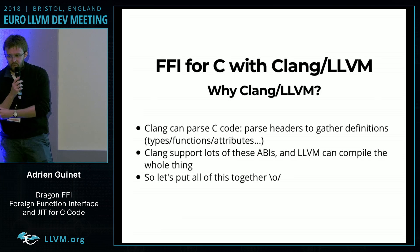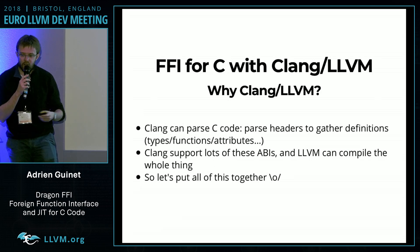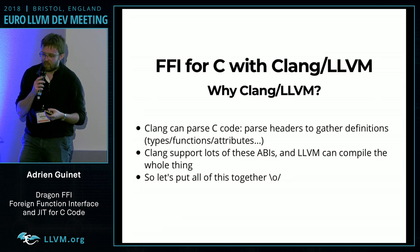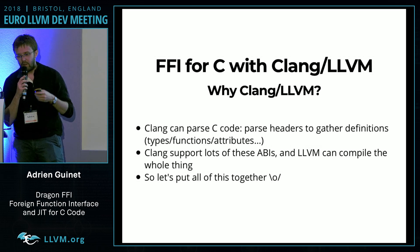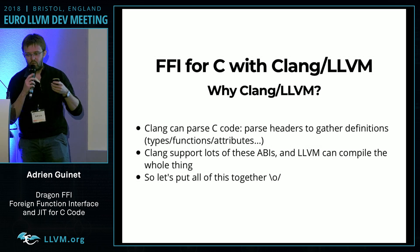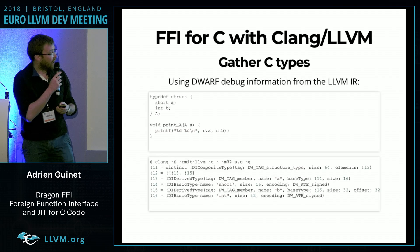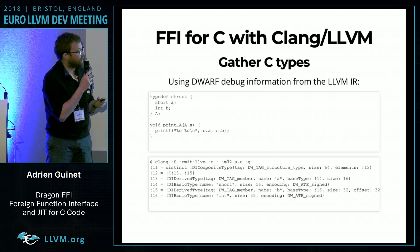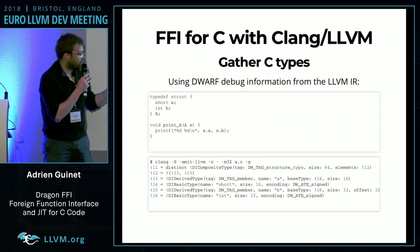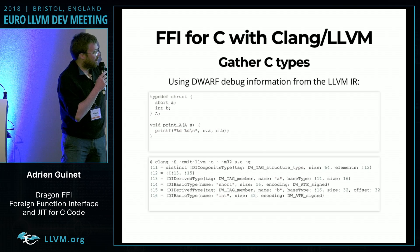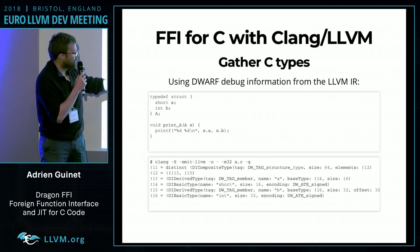So why are we using Clang and LLVM? Clang can parse C files — it's a really good C parser. It supports a lot of ABIs, and LLVM can compile them, so you just put all of these together. How do we do that? We use DWARF debug information in the LLVM IR module, because you have everything you need there.